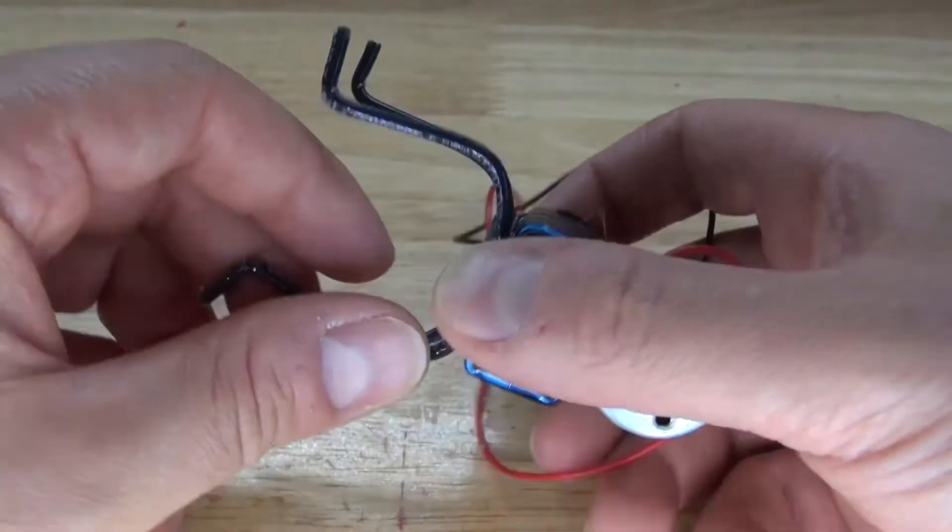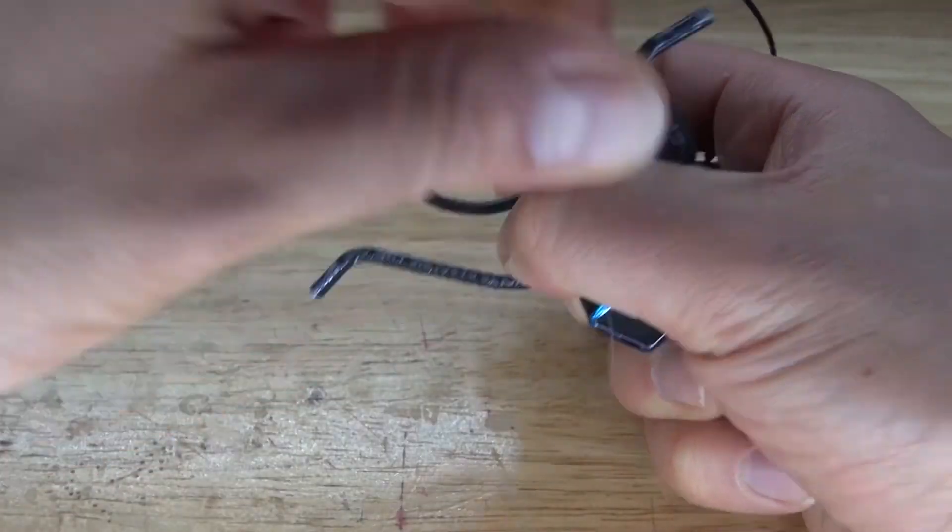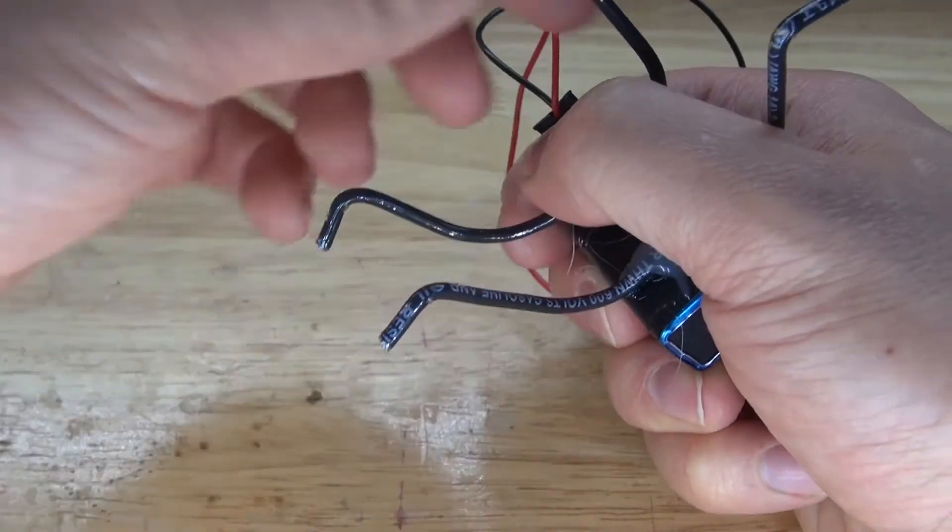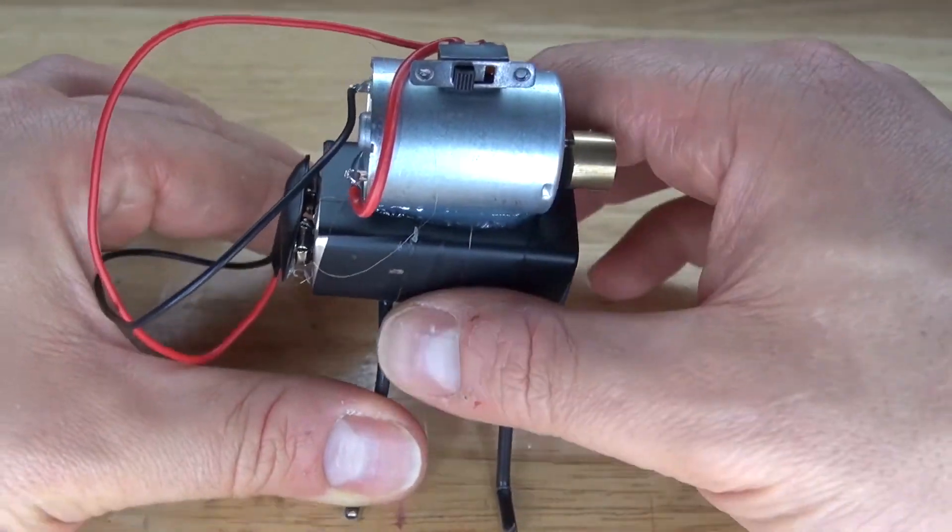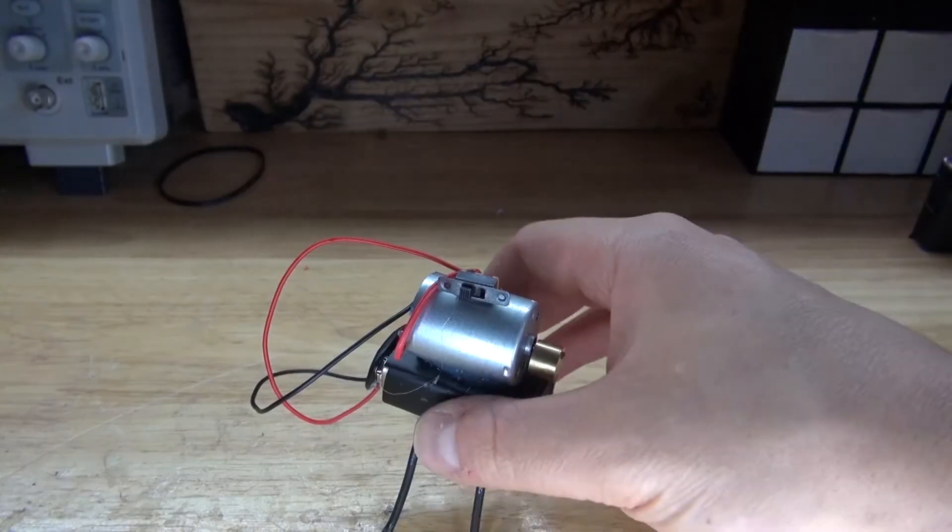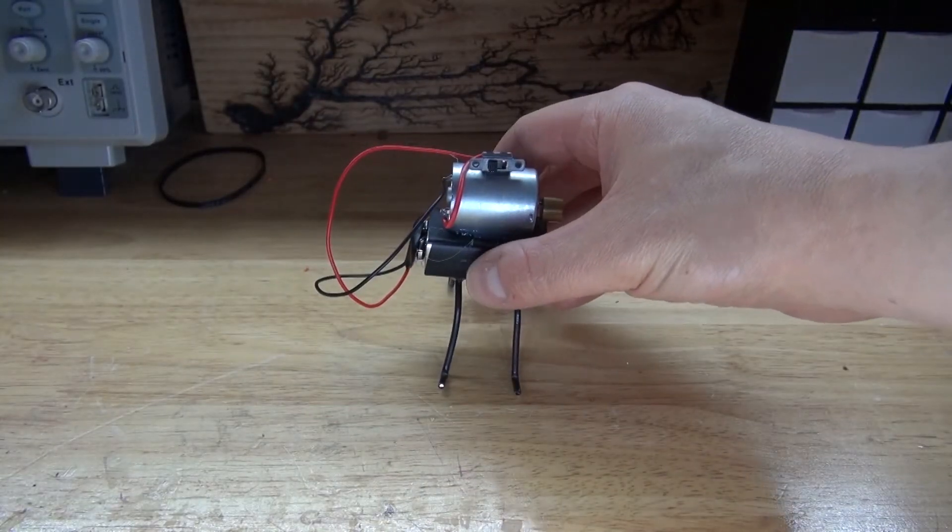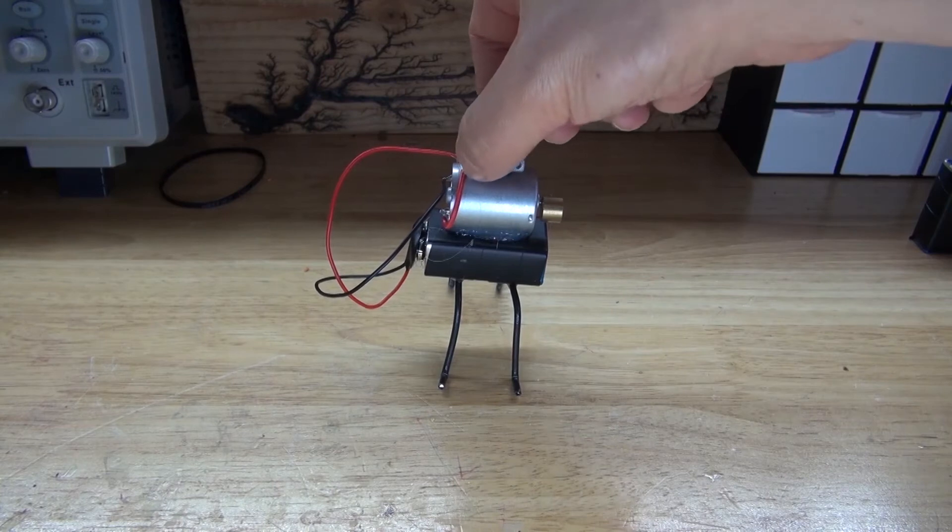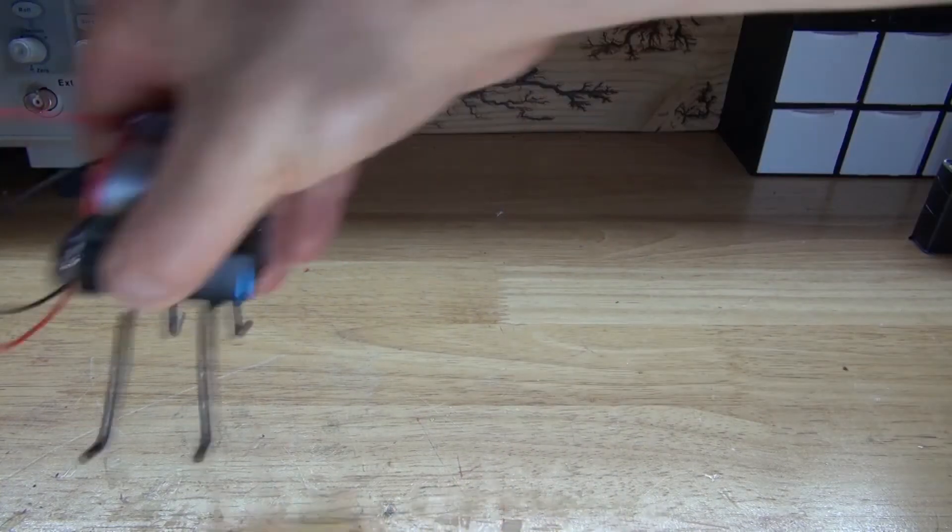Next, what you need to do is adjust the legs so that they're nice and even. So then that way this robot can be more balanced. And now it's time to test it out. Place it right here. Flip the switch. And, whoa, that goes really fast. Much faster than I anticipated. That's really cool.